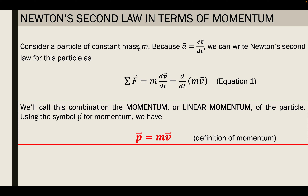Consider a particle of constant mass m. Because acceleration is equal to the change in velocity over the change in time, we can write Newton's second law for this particle. Take note that Newton's second law is: the sum of all forces is equal to mass times acceleration. If we substitute the value of acceleration, which is dv over dt, Newton's second law becomes: the net force F is equal to mass times dv over dt.